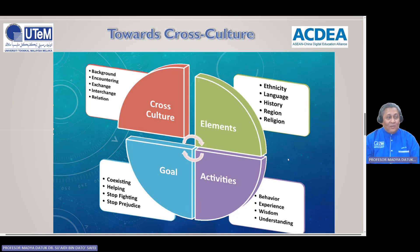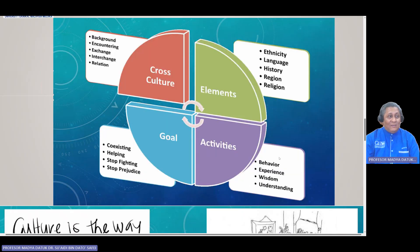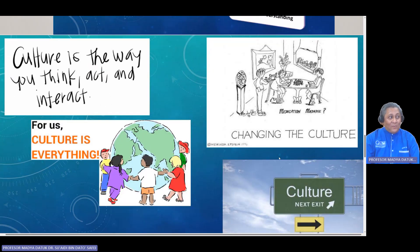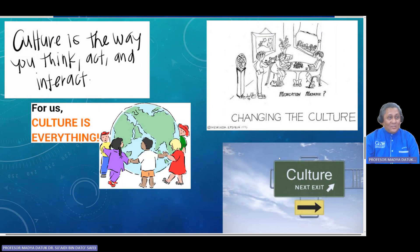The elements mentioned earlier involve activities and the way they run their life every day. The goal of cross-culture is that we coexist — we can interact with others, stop fighting, stop prejudice and help each other. Cross-culture involves encountering and exchanging ideas, just like what we have in the Asia-China Digital Education Alliance and UTEM. It's cross-culture activities. Culture is the way that we think, the way we act and the way we interact. We have to customise our culture if we go to another country.